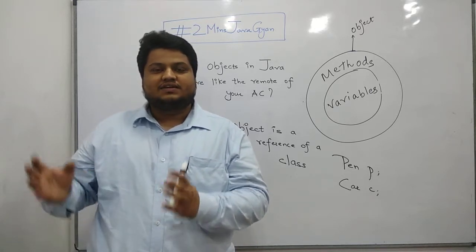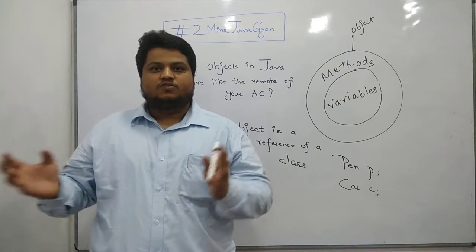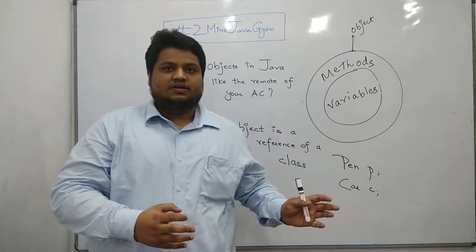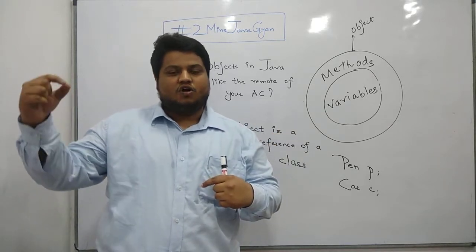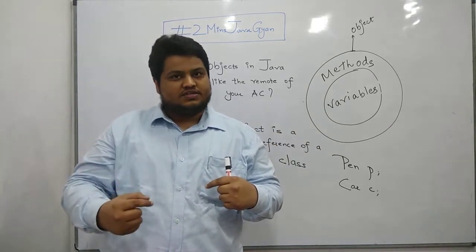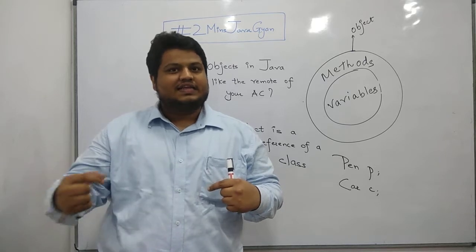So obviously, the basic difference is class is a blueprint, whereas object is the actual implementation. But now, objects come with its own circle. Try and understand that an object can only invoke those things which are inside its class. Nothing less, nothing more.